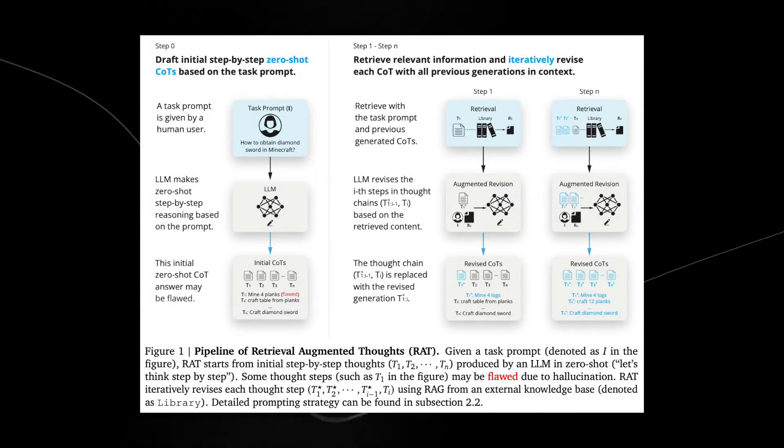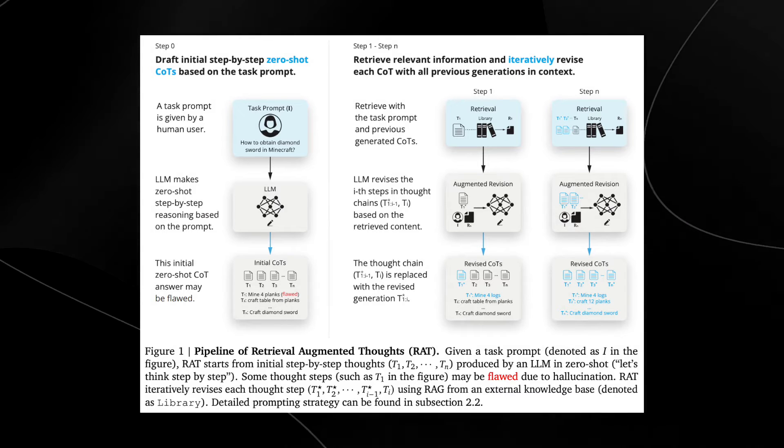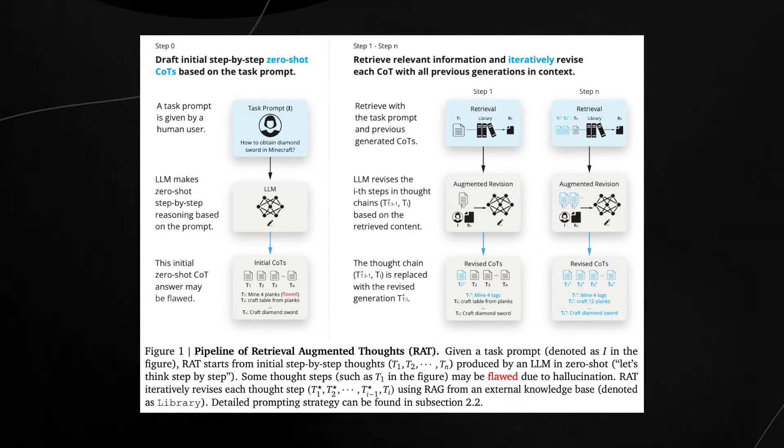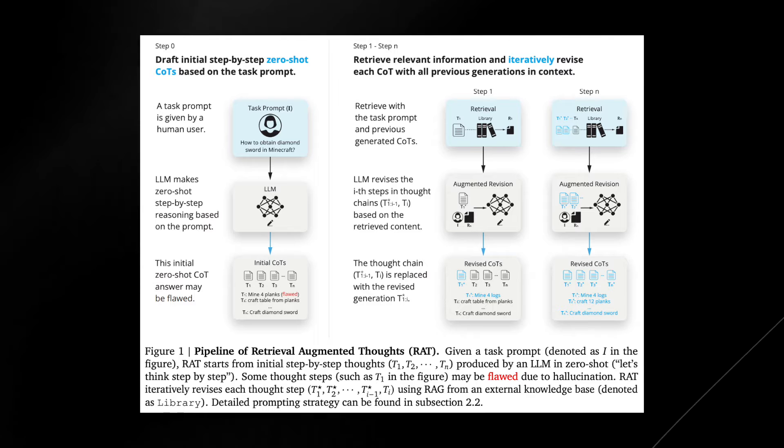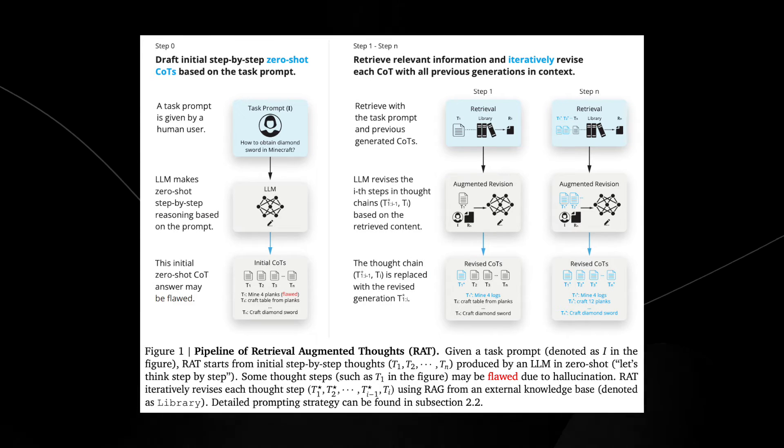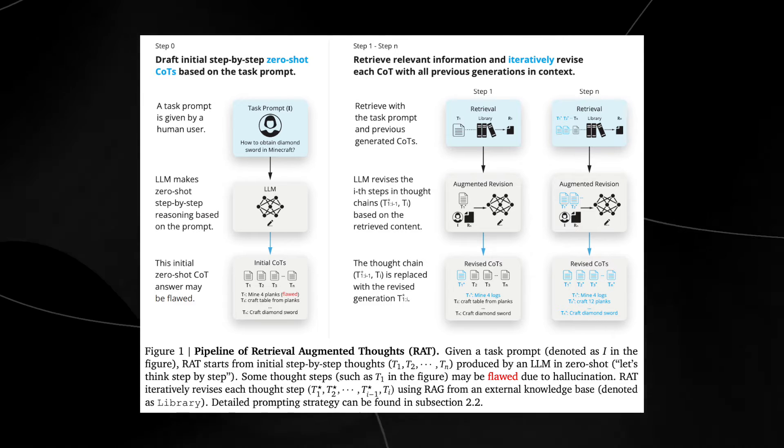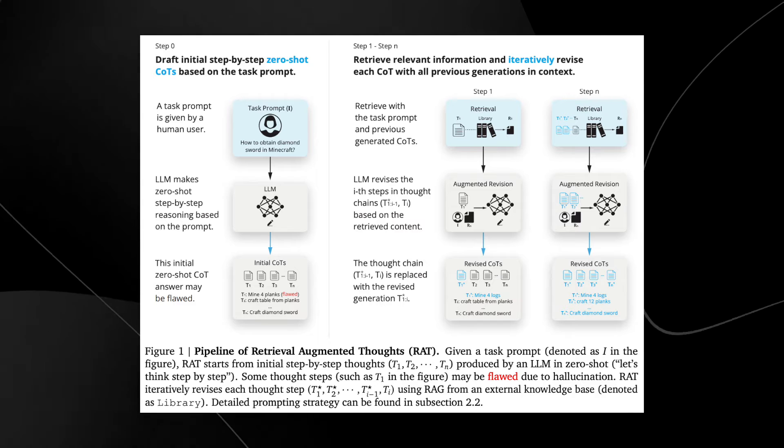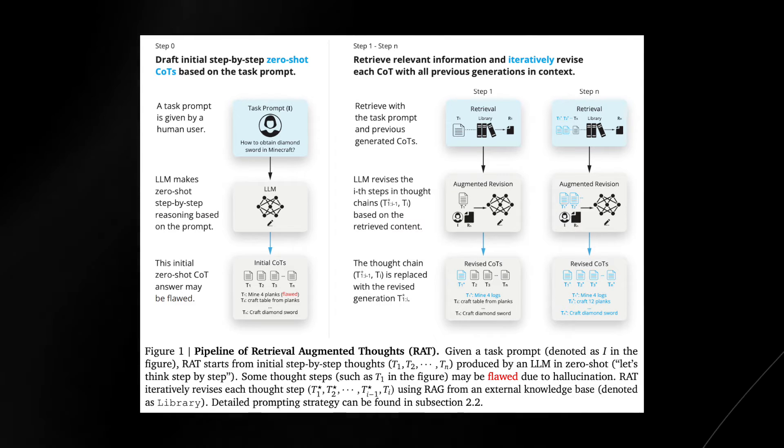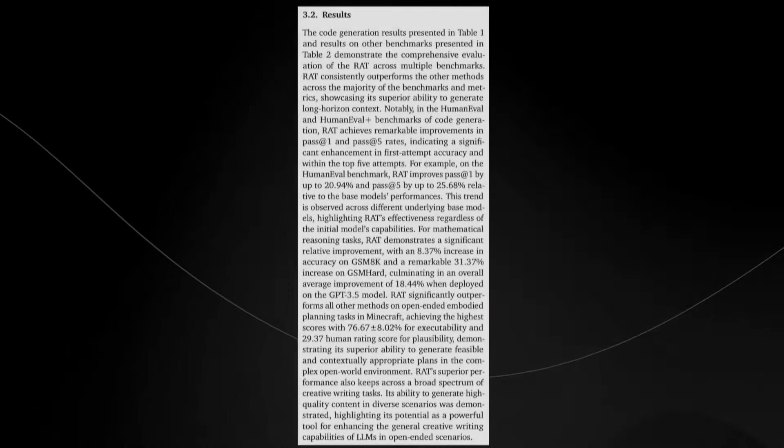Imagine you're asking an AI to plan a surprise birthday party. The initial plan might be basic. With RAT, the AI then revisits each step, searching external sources to refine ideas, like choosing the perfect gift based on recent trends or finding a cake recipe that matches dietary restrictions. This process ensures that the final plan is not just creative, but also practical and tailored to specific needs.